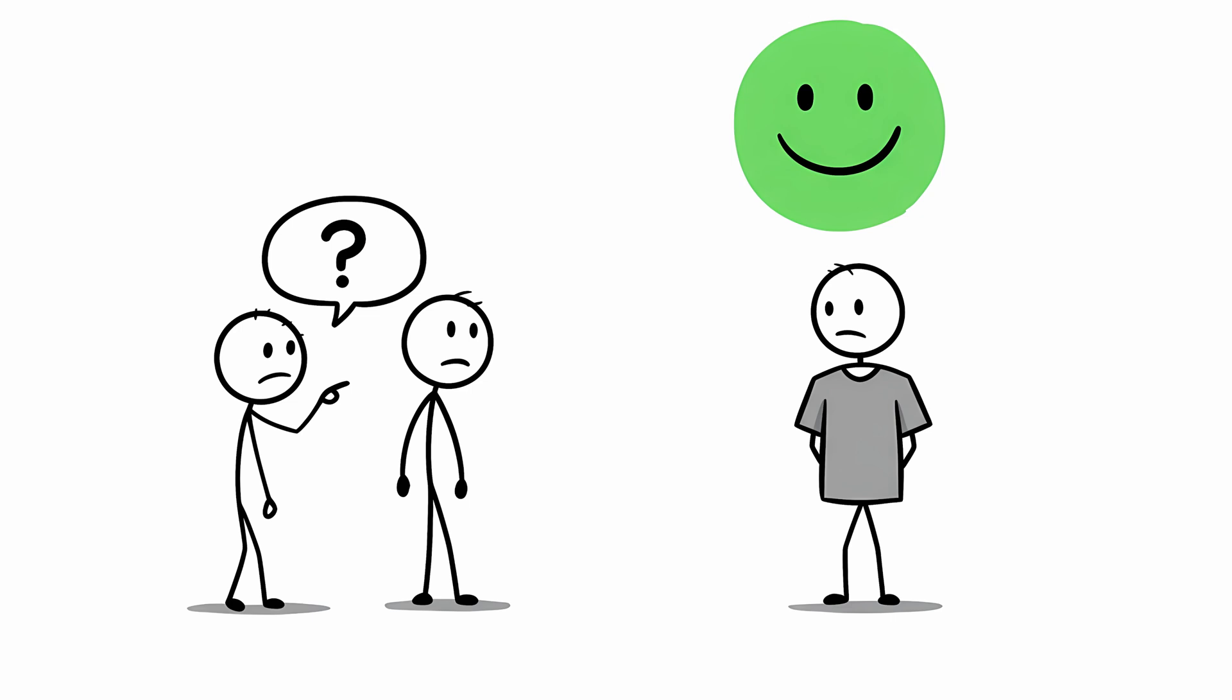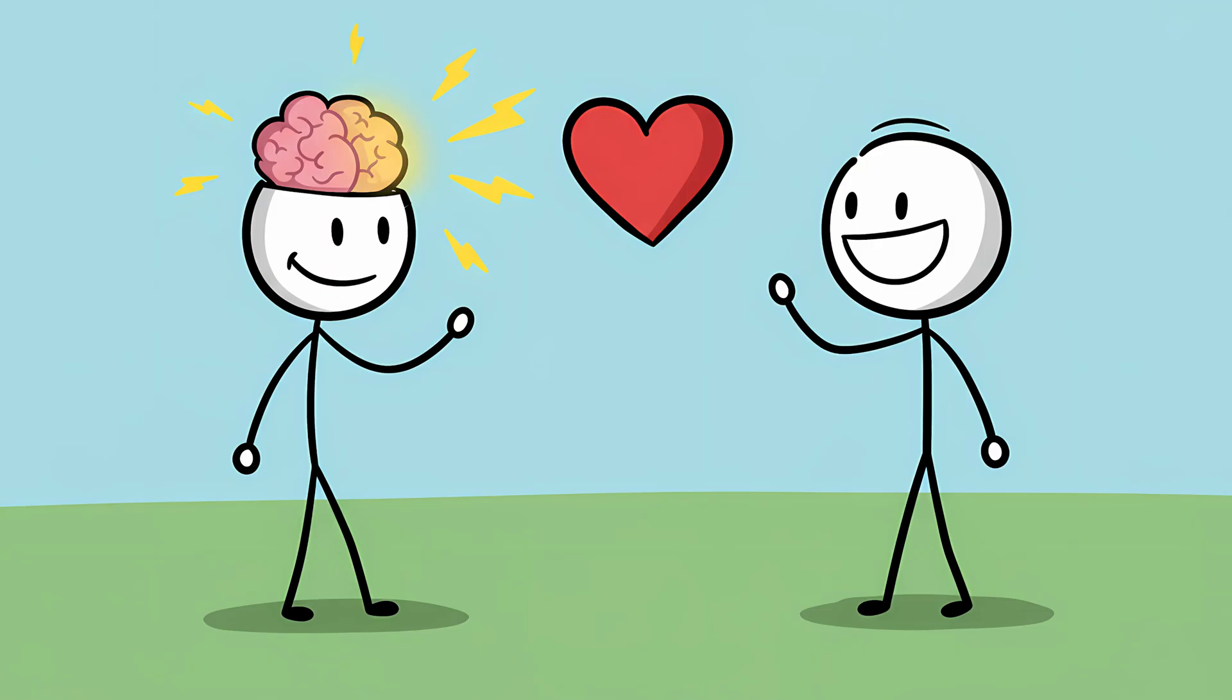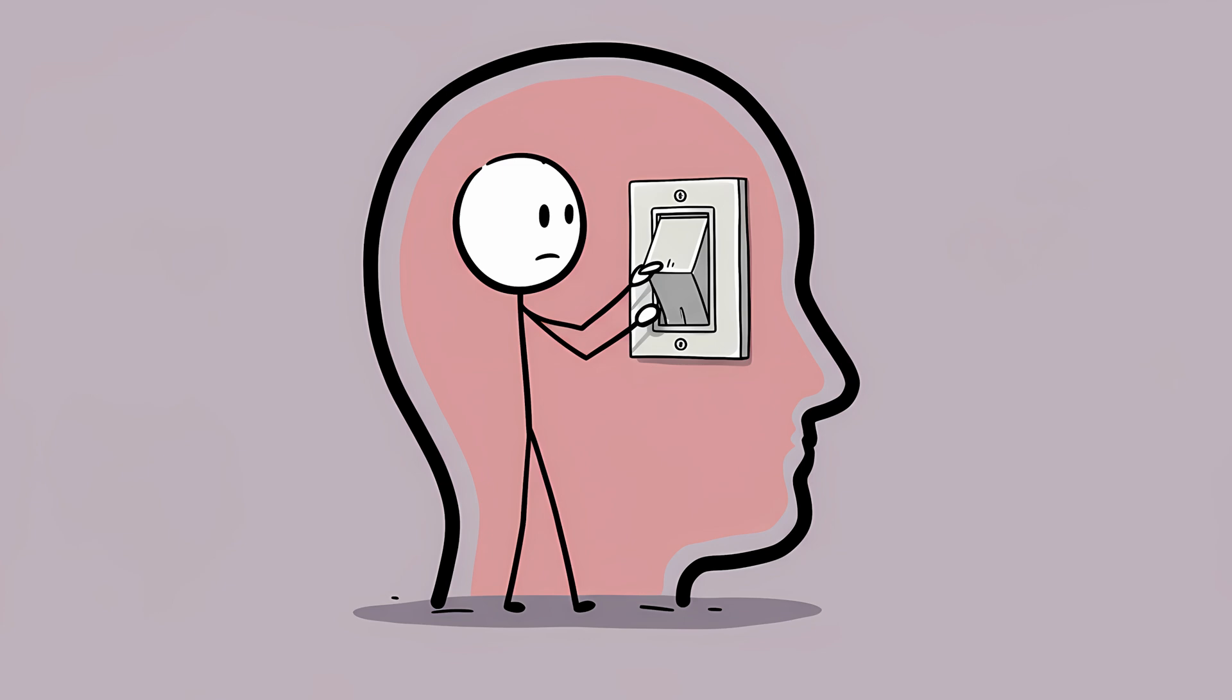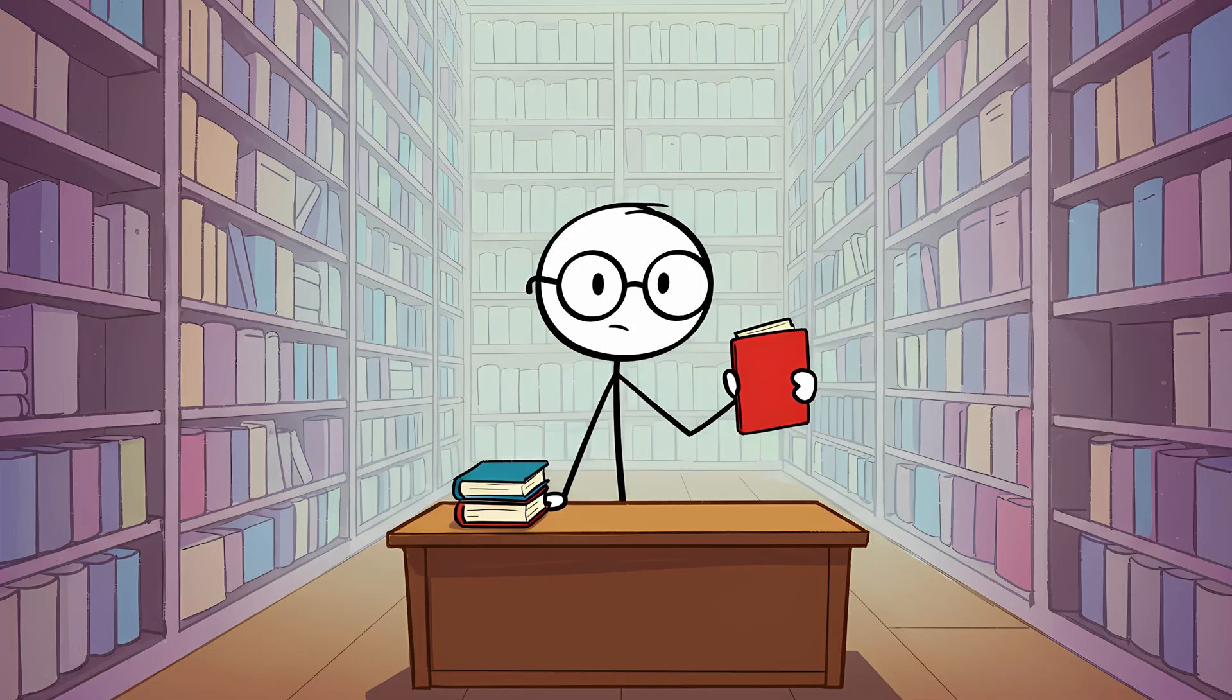When you see your best friend, the rhinal cortex lights up and screams, Yes, familiar. I know this one. When you see a complete stranger, it stays quiet. It's a simple, binary, yes or no switch for recognition. It's separate from the hippocampus, which is the brain's librarian, in charge of recalling the specific details of the memory.